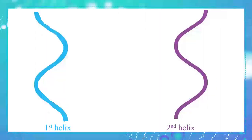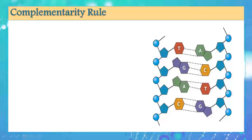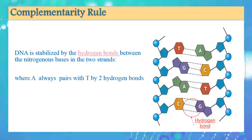We said the two helices make one double helix — so how does the first helix combine with the second to form a double helix? The answer lies in the bonds between the two DNA strands. DNA is stabilized by hydrogen bonds between the nitrogenous bases in the two strands. Adenine always pairs with thymine by two hydrogen bonds, and cytosine always pairs with guanine by three hydrogen bonds.